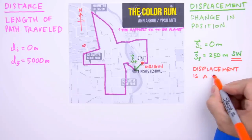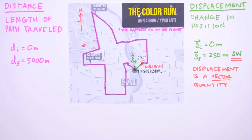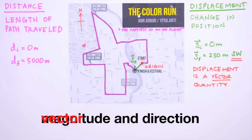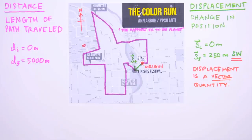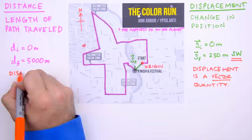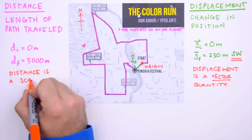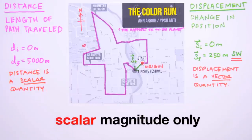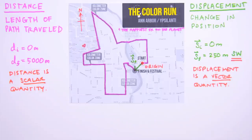Displacement is what we call a vector quantity. A vector quantity is a quantity endowed with both magnitude — in this case 250 meters — and direction — in this case southwest of the origin. We indicate a vector quantity graphically by drawing an arrow, the length of which represents the magnitude of the vector. A vector is indicated mathematically by drawing a tiny arrow above the variable representing the vector. Distance, on the other hand, is not a vector quantity because it lacks directional information. Distance is what we call a scalar quantity — a quantity describing magnitude only.